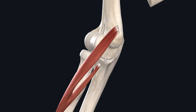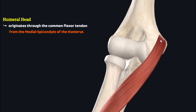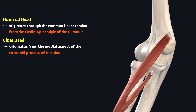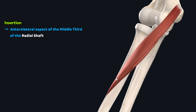The pronator teres muscle has two heads of origin: a superficial humeral head and a deep ulnar head. The humeral head originates through the common flexor tendon from the medial epicondyle of the humerus. The ulnar head lies deep to the humeral head and originates from the medial aspect of the coronoid process of the ulna. These two heads then converge to form a single muscle belly which travels inferolaterally to insert through a flat tendon onto the anterolateral aspect of the middle third of the radial shaft.